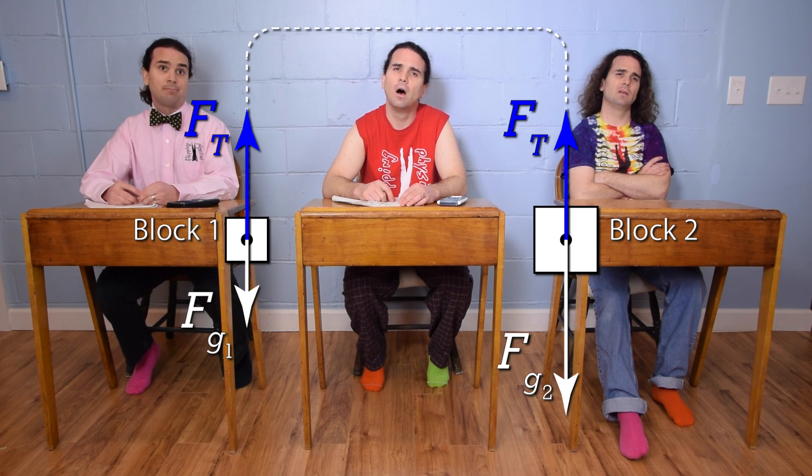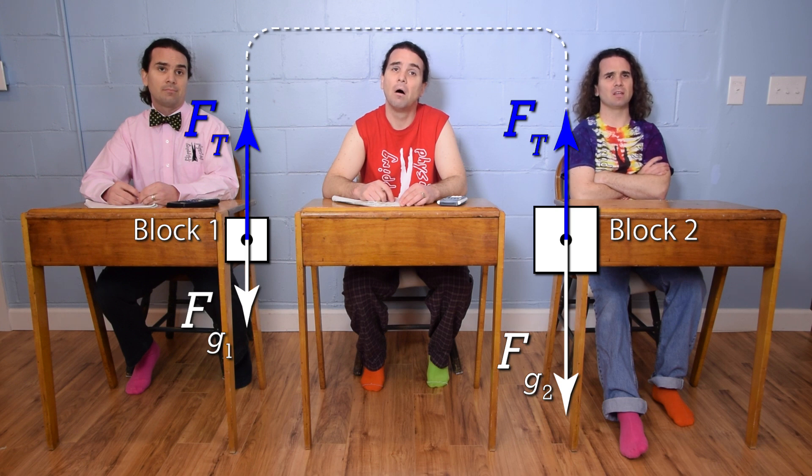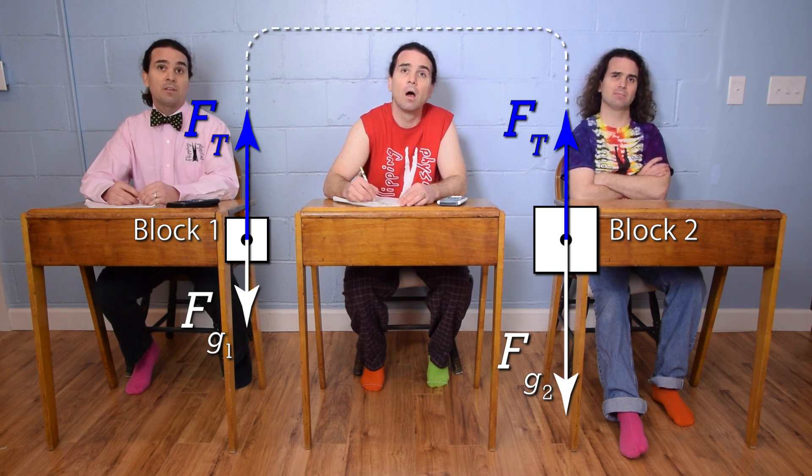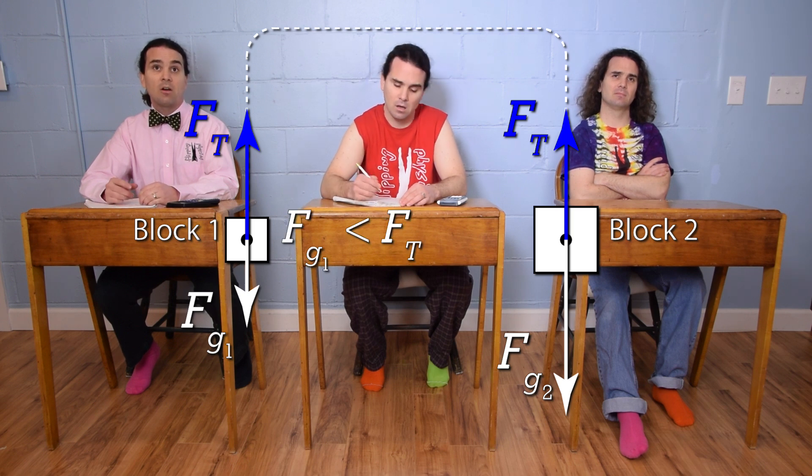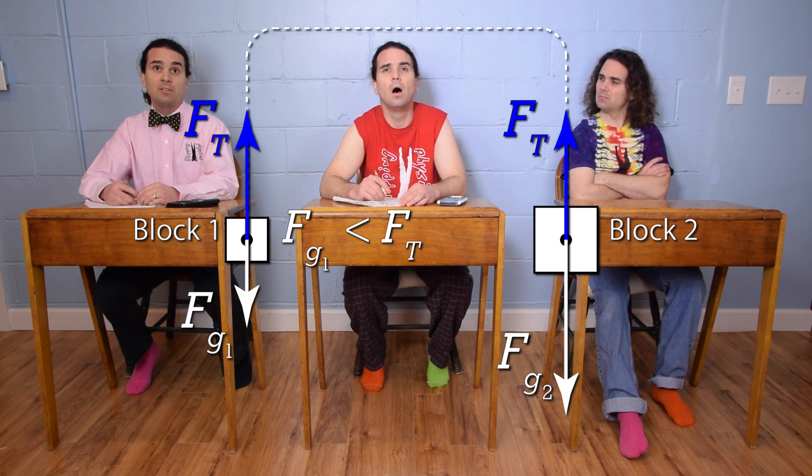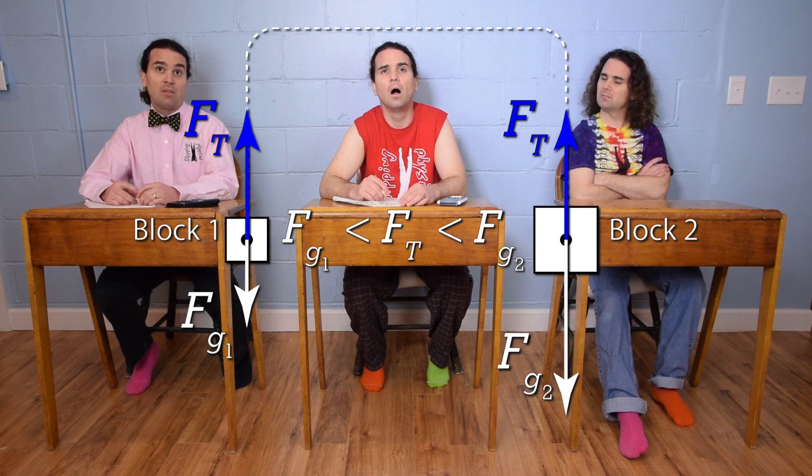Well, because block two has a larger force of gravity acting on it than block one, block one will accelerate upward and block two will accelerate downward. Therefore, the tension force has to be larger in magnitude than the force of gravity one to cause block one to accelerate upward. And the tension force also has to be smaller in magnitude than force of gravity two to cause block two to accelerate downward.